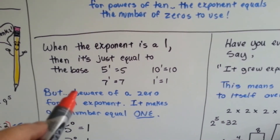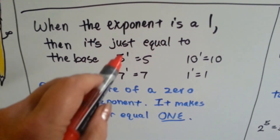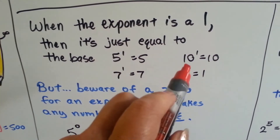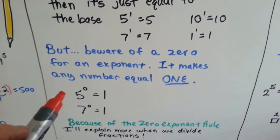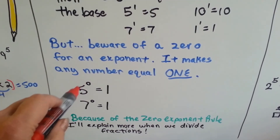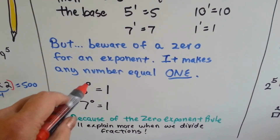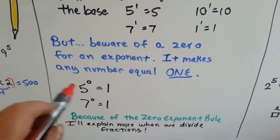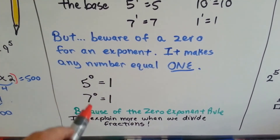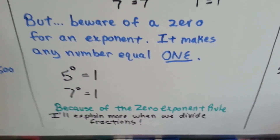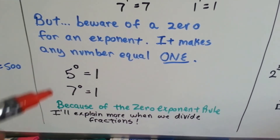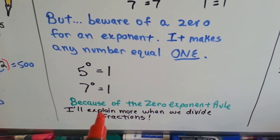When the exponent is 1, it's just equal to the base: 5 to the 1st power is 5, 7 to the 1st power is 7, 10 to the 1st power is 10. But beware of a 0 exponent — when you see it in algebra or in math, a 0 exponent makes any number equal 1. 5 to the 0 power equals 1, 7 to the 0 power equals 1, 999,000 to the 0 power equals 1. It doesn't matter what the number is — it's going to equal 1.